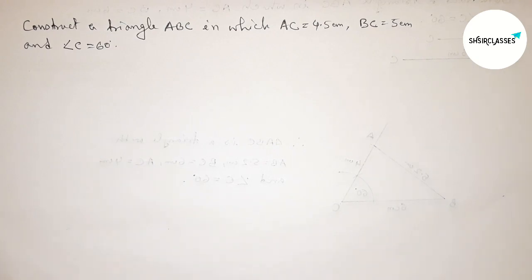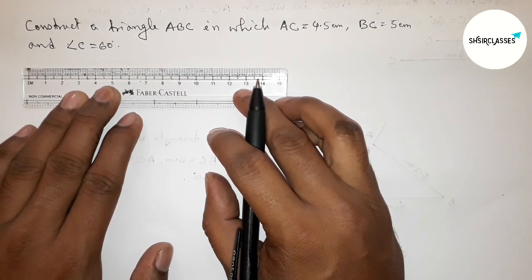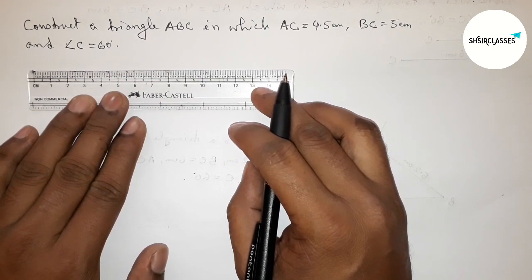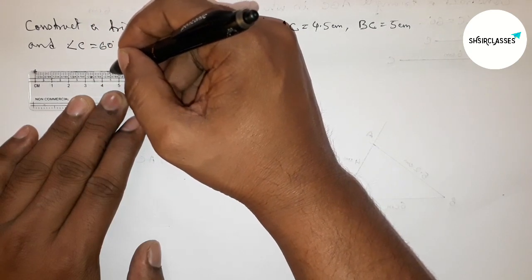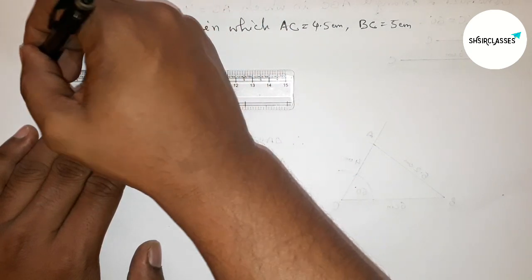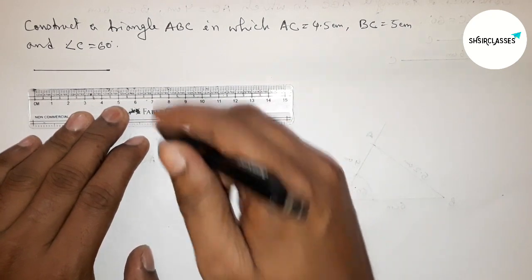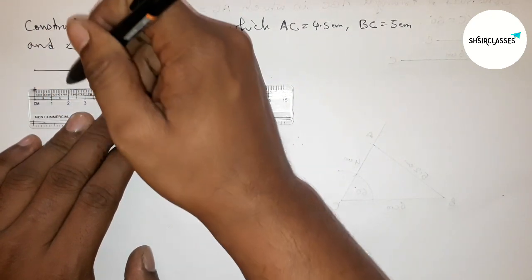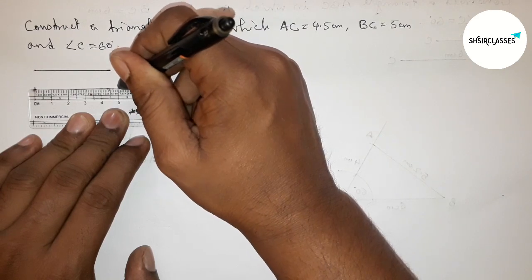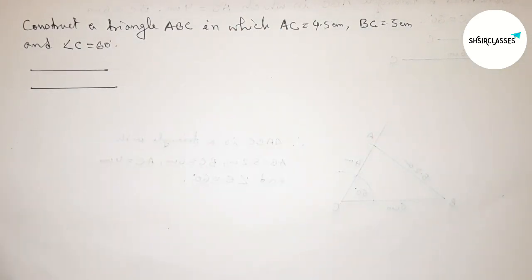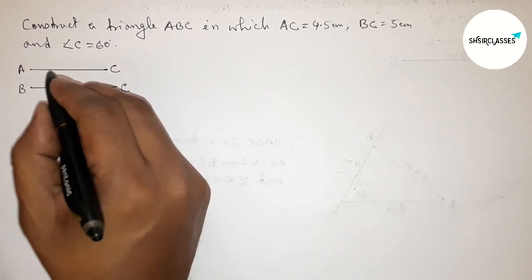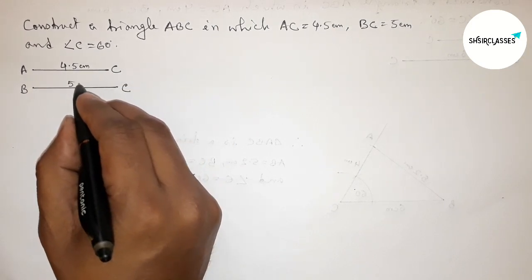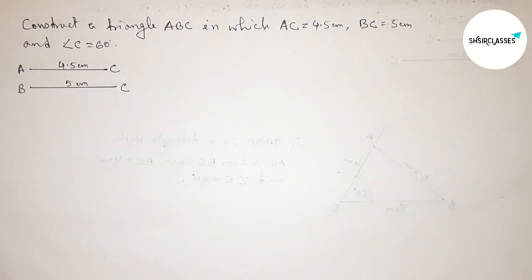First of all, let us draw the given two sides. Drawing 4.5 centimeters starting from zero — this is the 4.5 centimeter line. Then drawing another line of 5 centimeters. This one is AC and this one is BC, so this is 4.5 and this one is 5 centimeters.